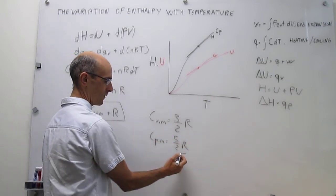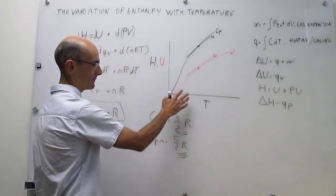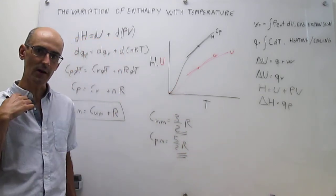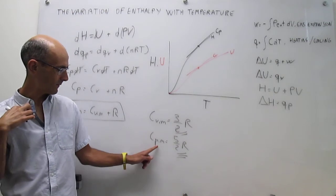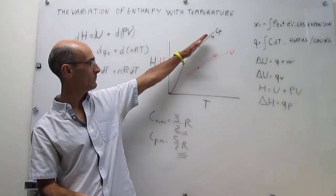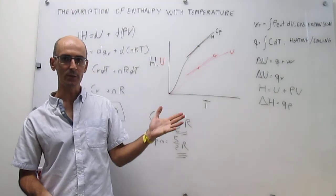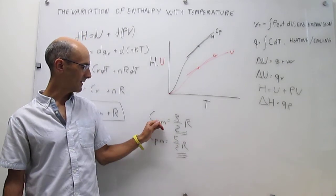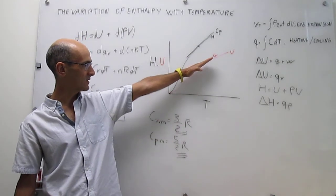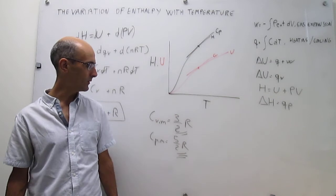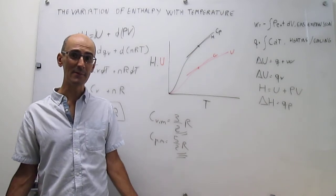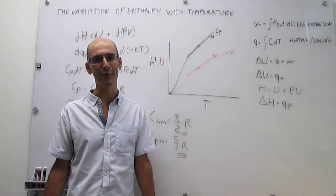So notice how this beautifully exemplifies what we're seeing in this graph. The fact that the heat capacity at constant pressure, which is the slope of this line at any point, should be a little bit larger than the heat capacity at constant volume, which is the slope of that line at any point. As a matter of fact, the difference happens to be simply r for an ideal gas.